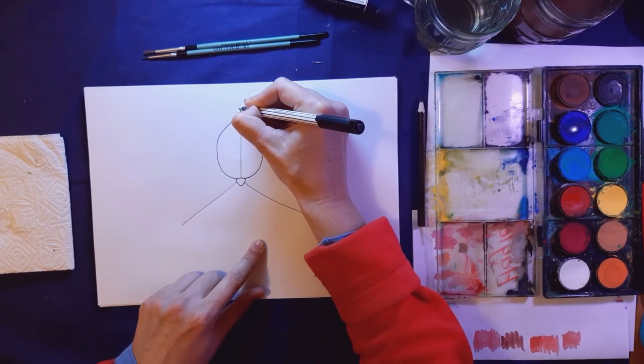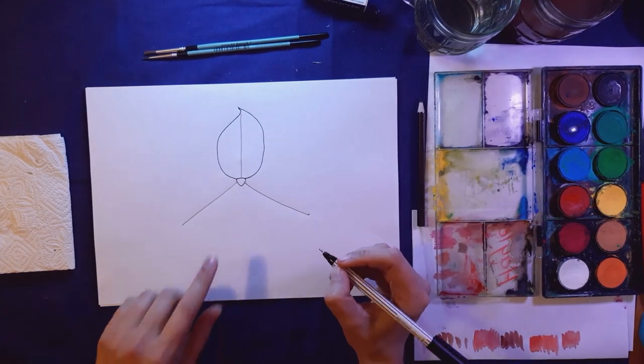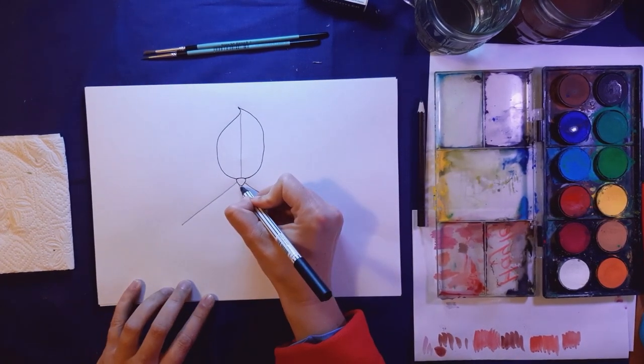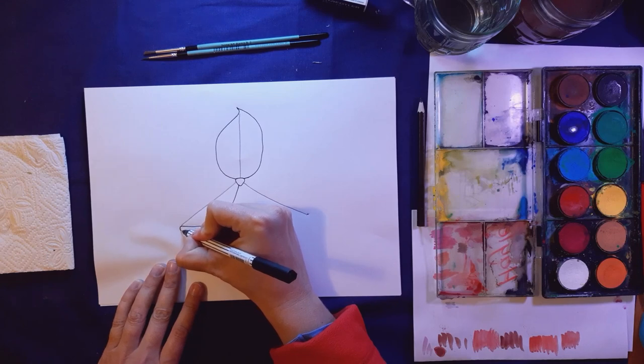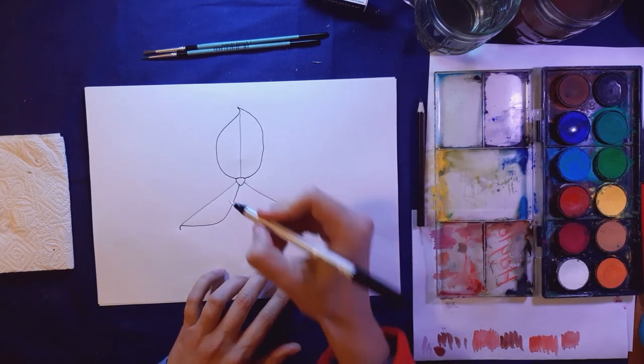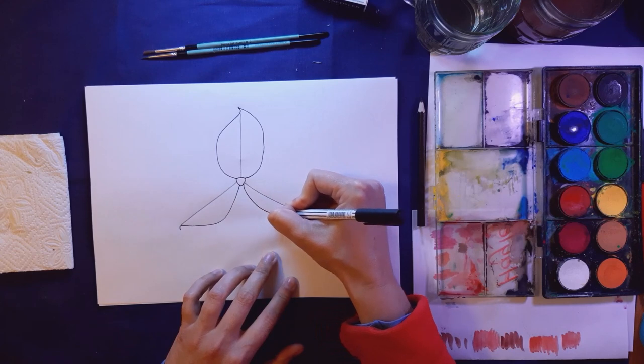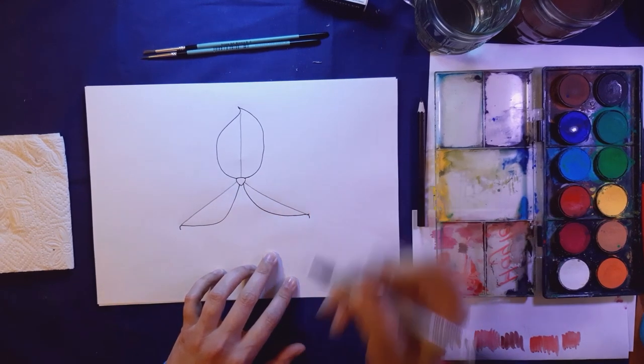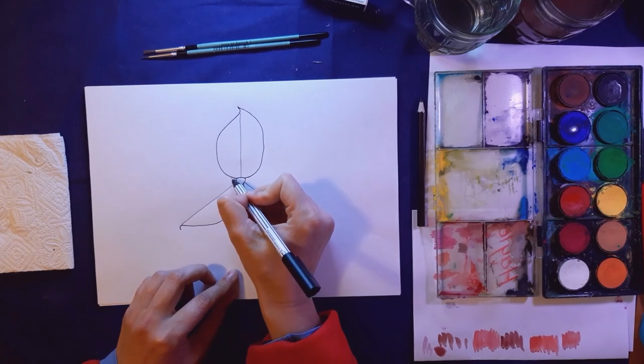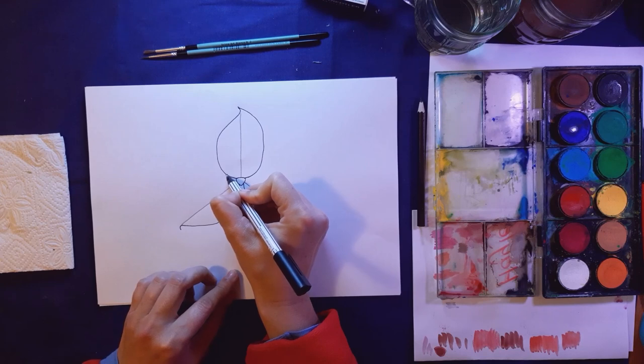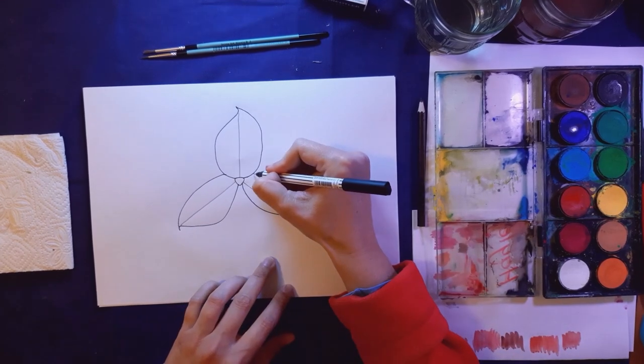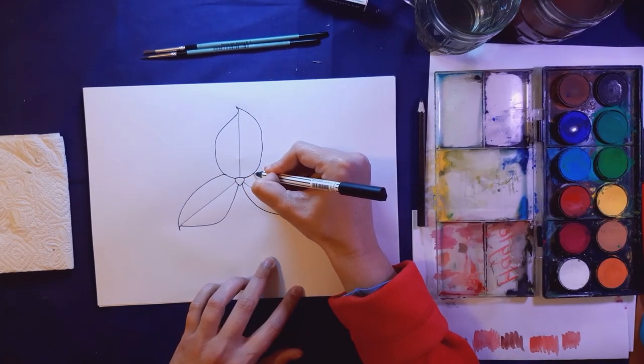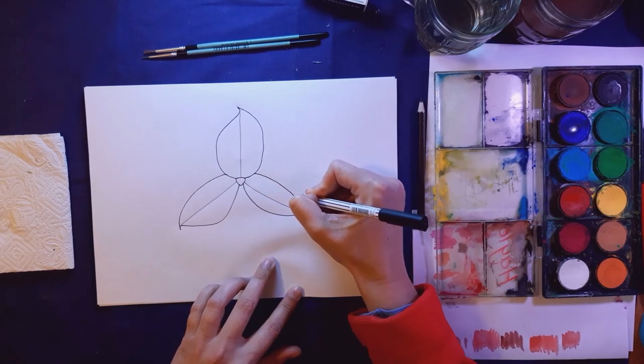Let's do the bottom petals now. Come out and in, and I like to put another little curl at the end. Do this side, and in. Then I'm going to pretend this part is coming underneath this petal here. It's going to come down and join up. This side, it's going to come from underneath, down and join up.